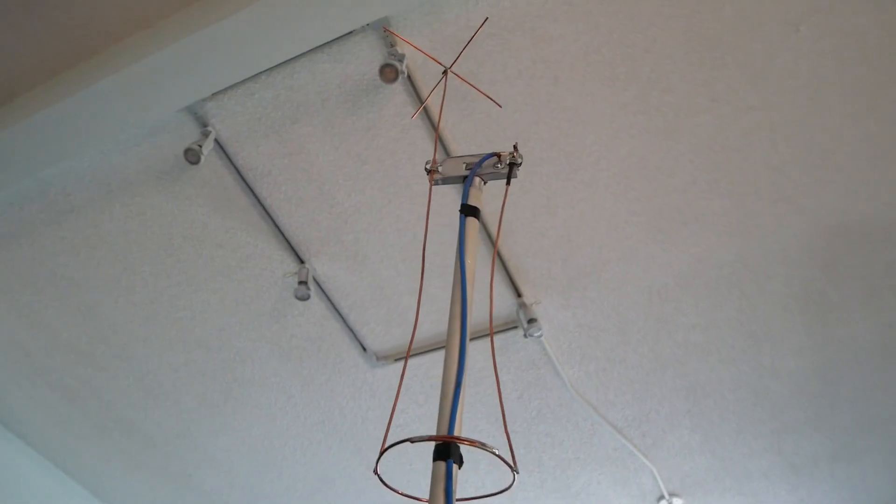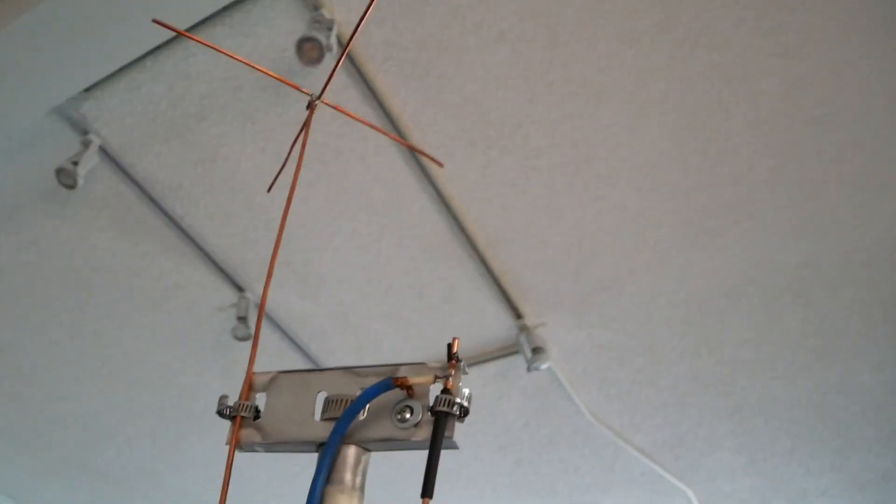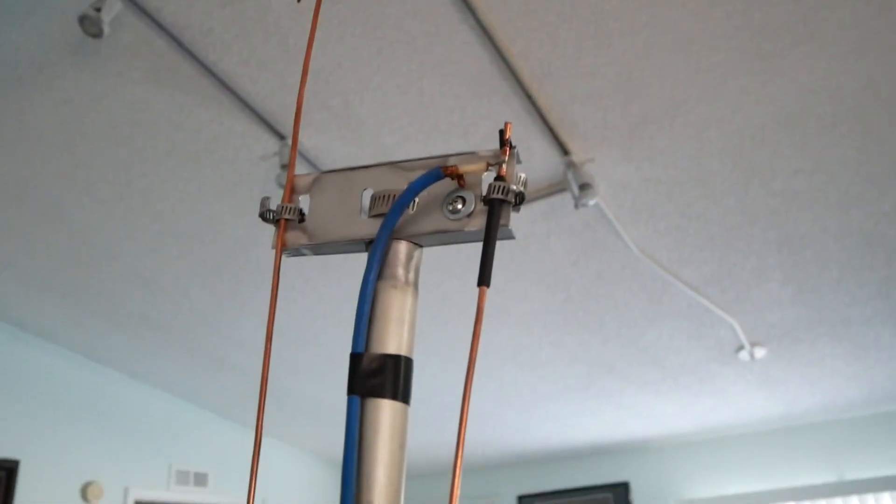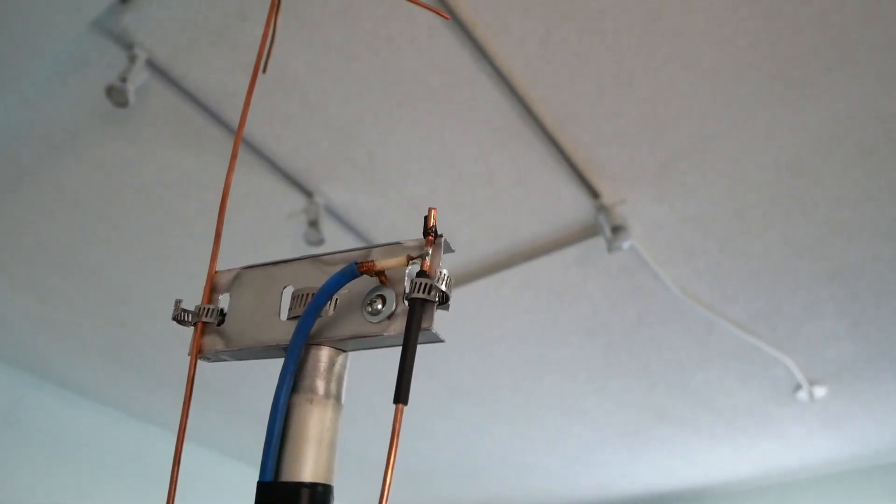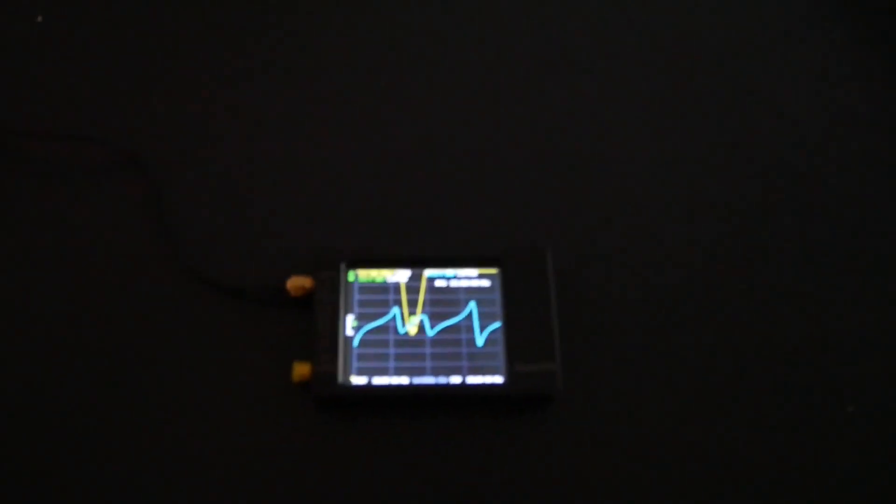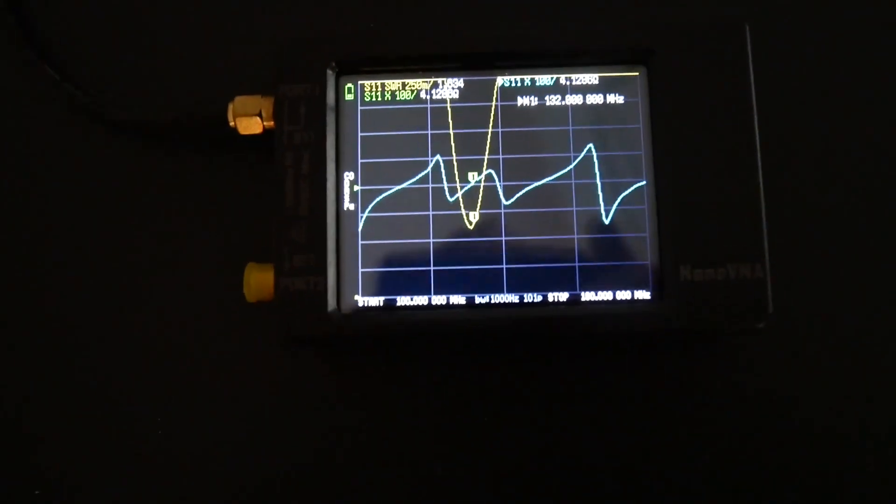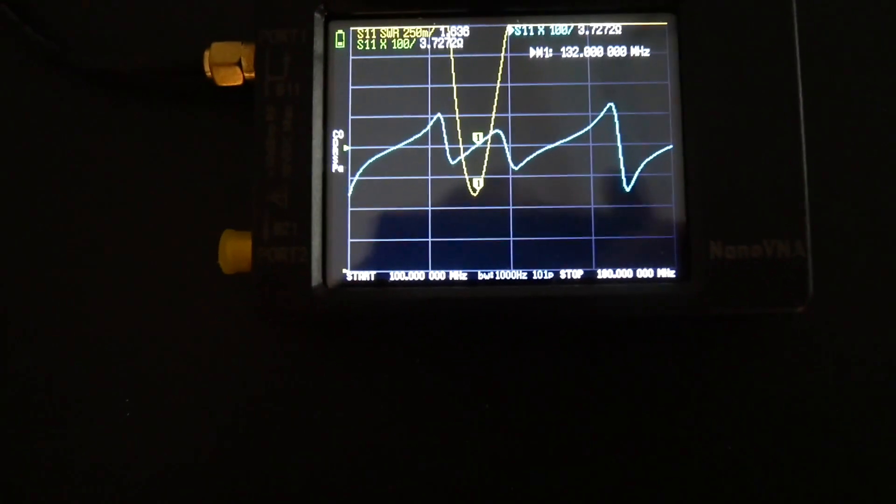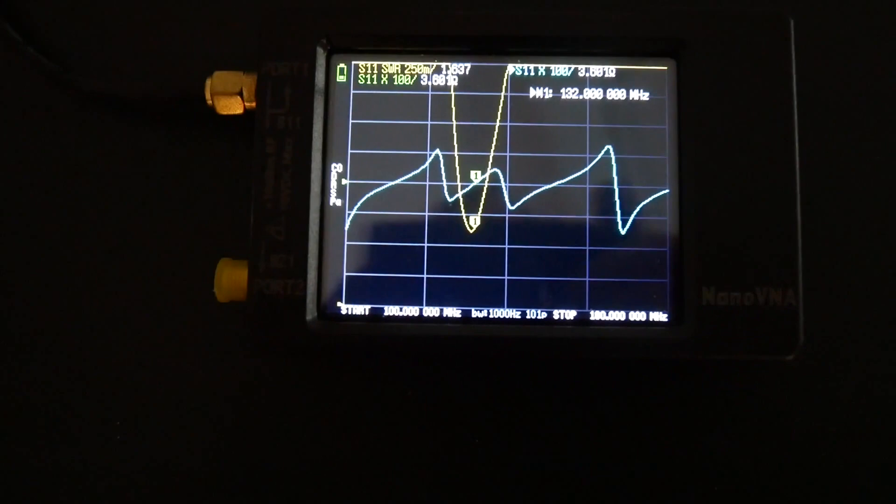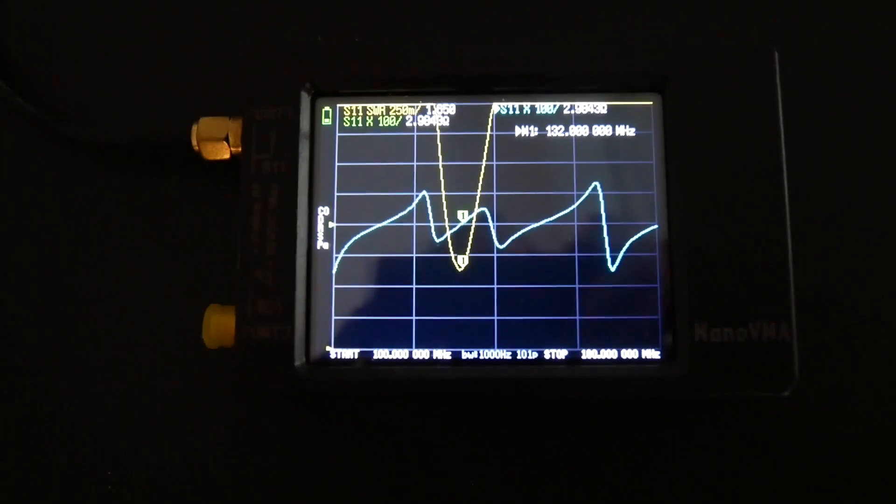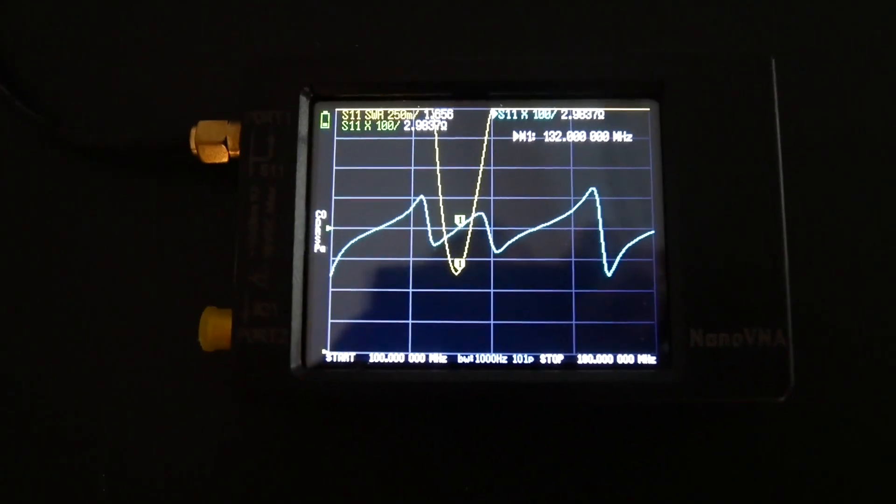Here's the finished product. I had to move the feed point slightly. When I first put it together, the SWR was just atrocious. So I moved the feed point down a little bit, and I shortened it just a hair. And we're actually pretty close, showing that it's 1.6 to 1 at 146 MHz. I'm going to play with the elements a little bit and see if I can get it down below that.